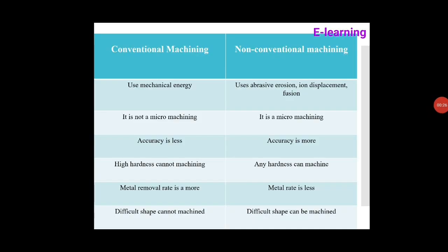Let's start with the difference between conventional and non-conventional machining processes, also called traditional and non-traditional machining processes. In a conventional machining process, mechanical energy is used to remove material. In non-conventional machining processes, energy is used in different mediums such as abrasive erosion, ion displacement, and fusion.